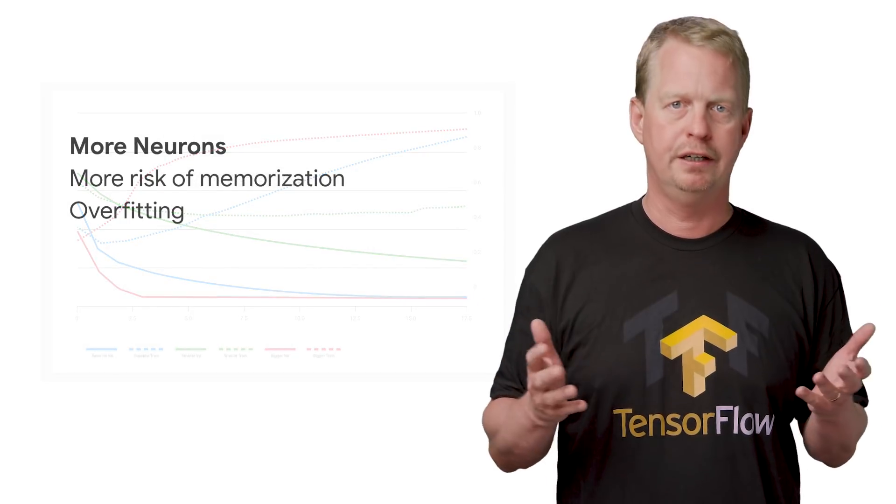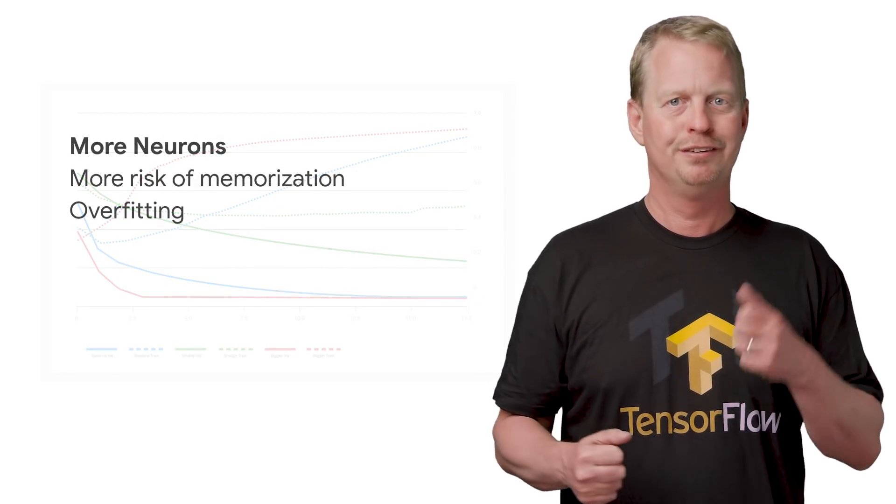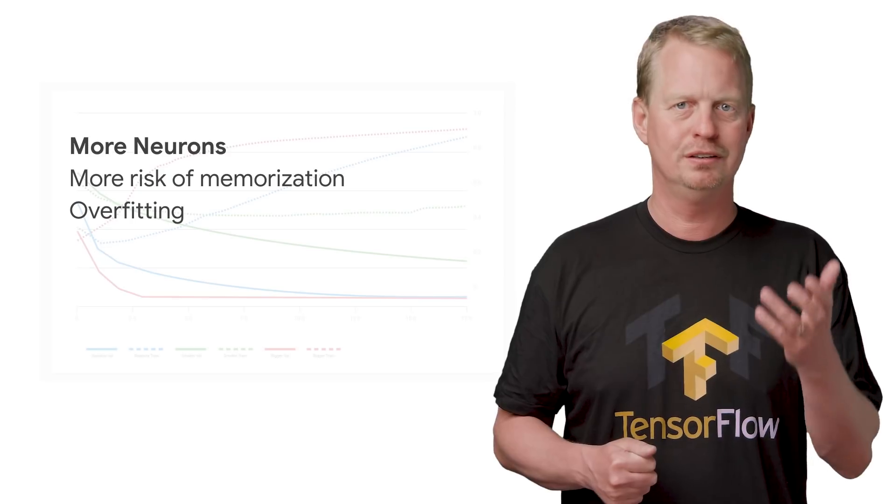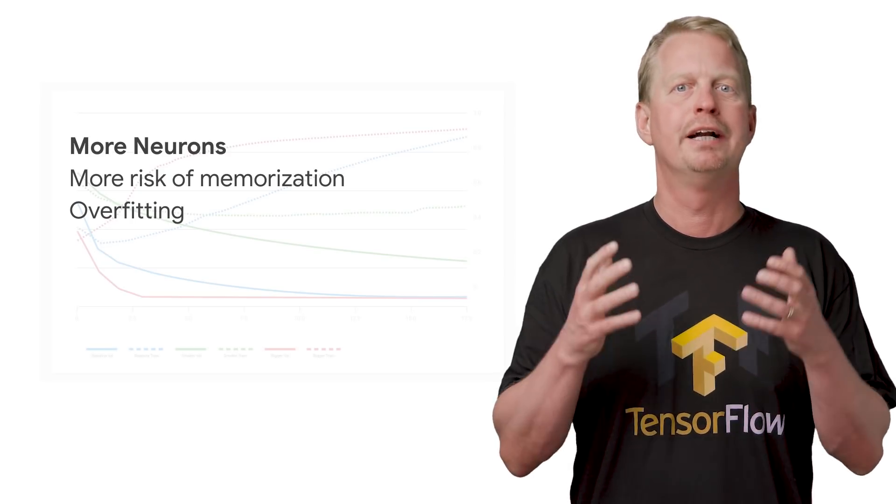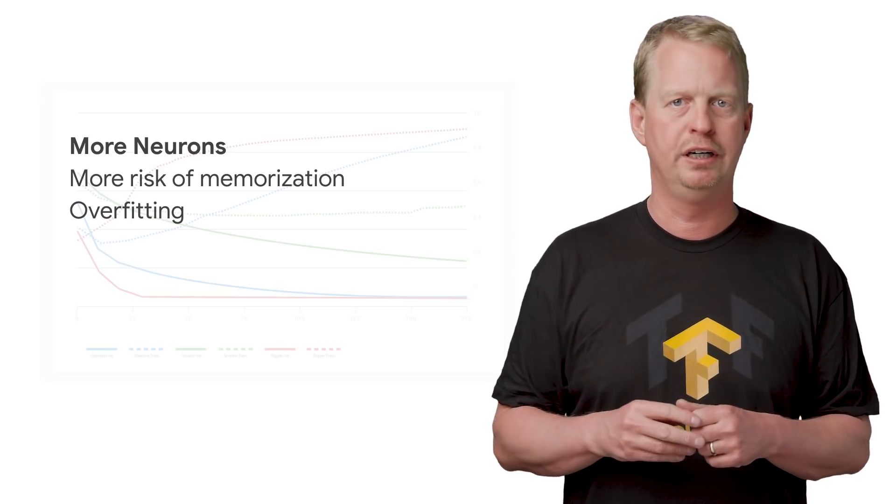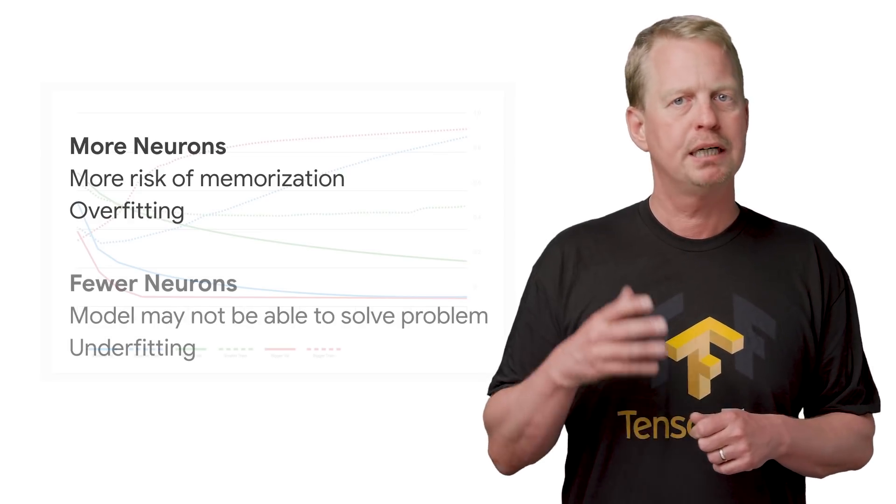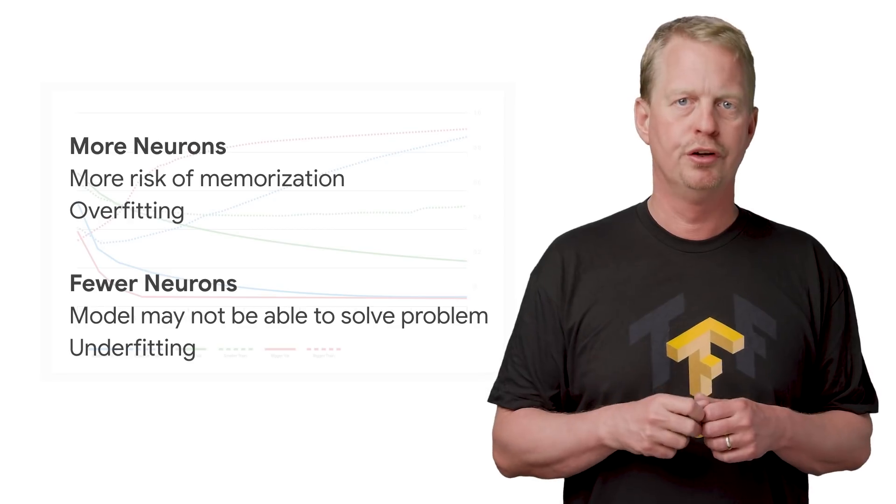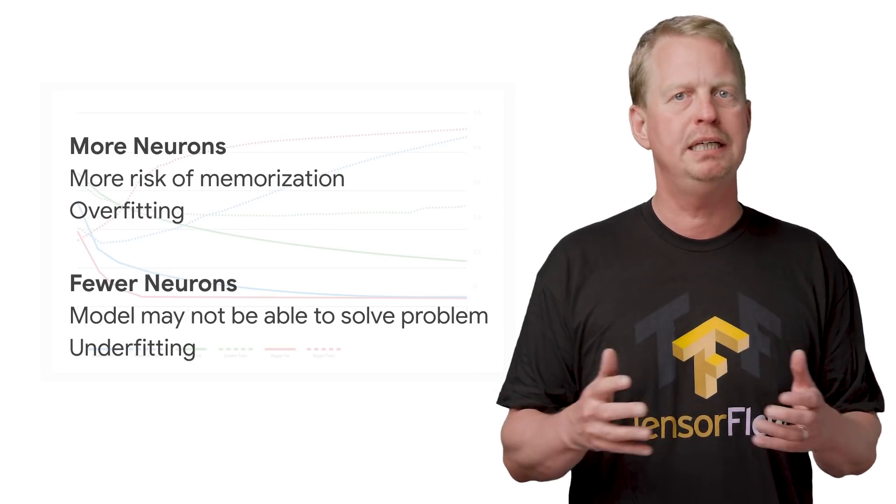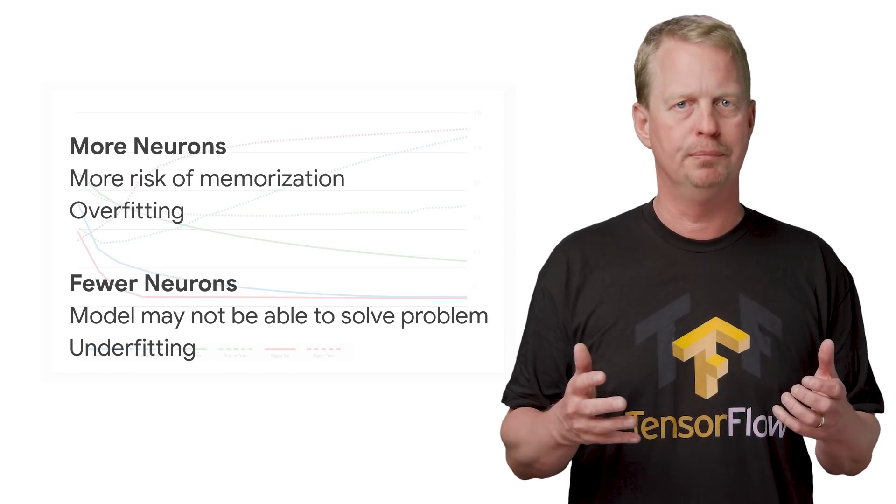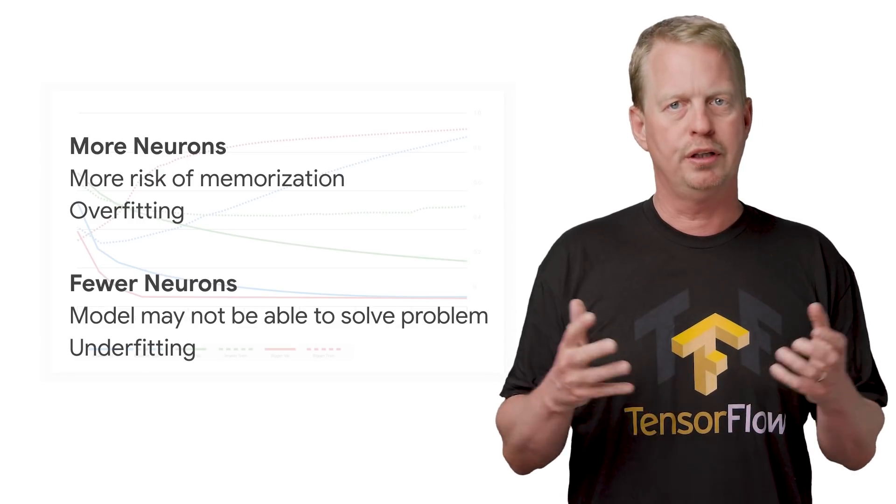The trade-off here is that the more neurons our model has, the risk for memorization on the test data increases. And our model will not work well during validation. This is called overfitting. But at the same time, if we have too few neurons, our model may not be expressive enough to solve the problems. This is called underfitting.